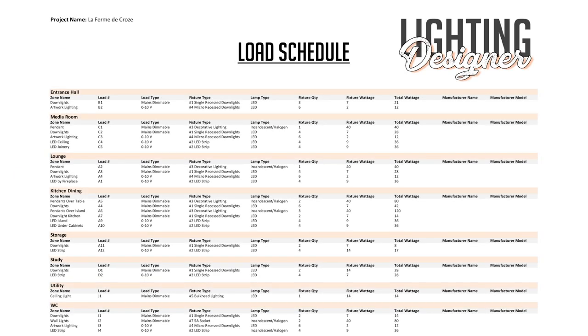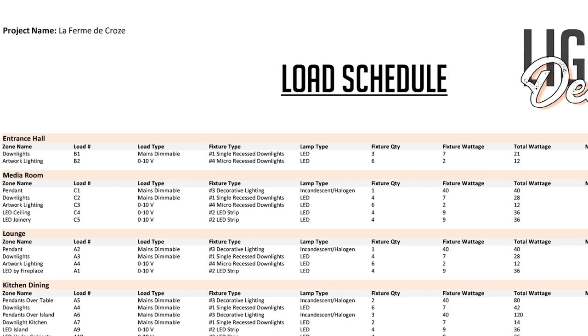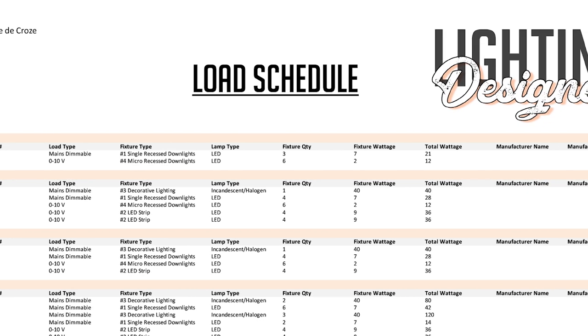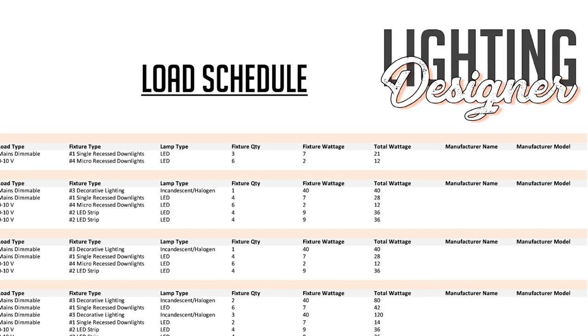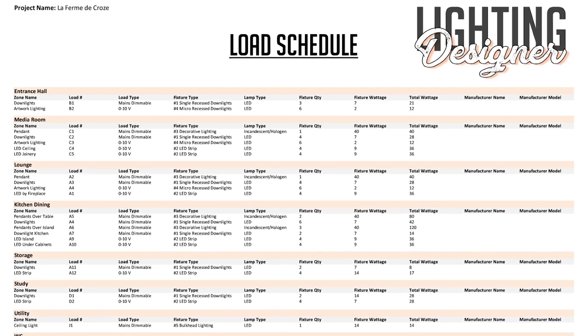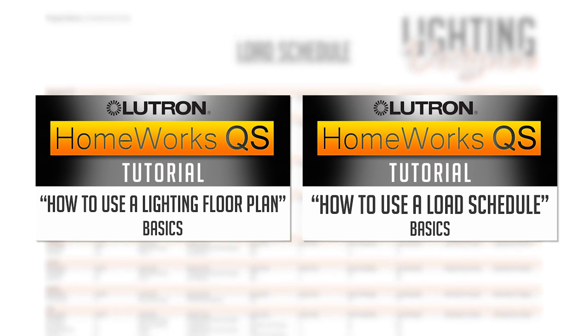Alternatively, you can also start from a load schedule, which should provide you with the same information as the lighting floor plan, but in a list format. In general, load schedules are issued by lighting designers, and this is actually one of my favorite ways to get the lighting circuit information.